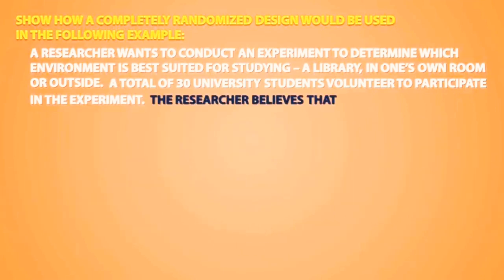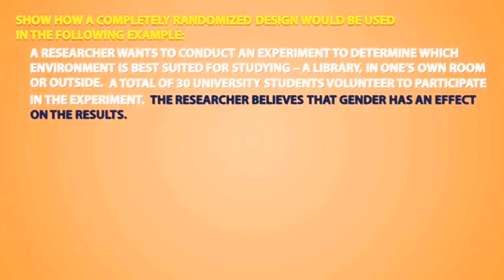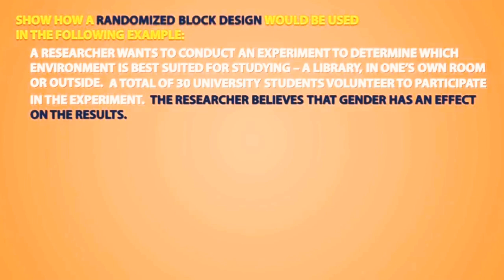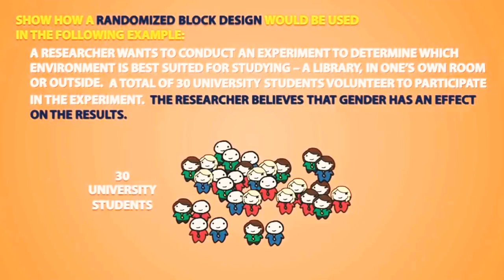Let's say that the researcher believes that gender has an effect on the results. In a case like this, we would use a randomized block design. A randomized block design doesn't immediately randomly assign experimental units to receive treatments. We first assign people into a block based on a characteristic expected to influence their response to the treatments. In this example, gender would be the blocking variable.